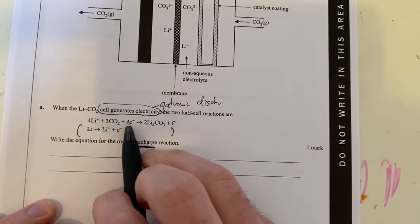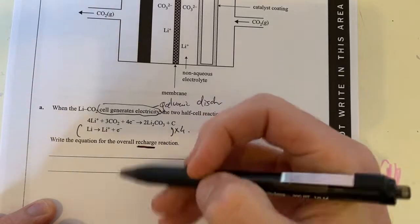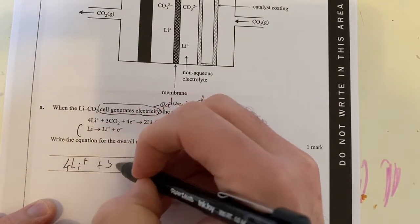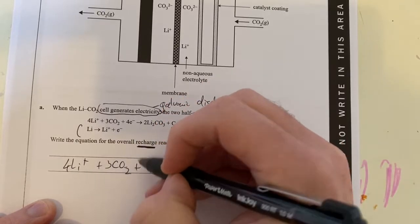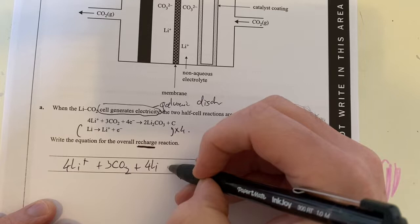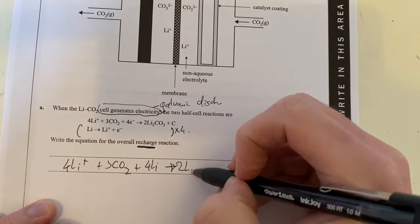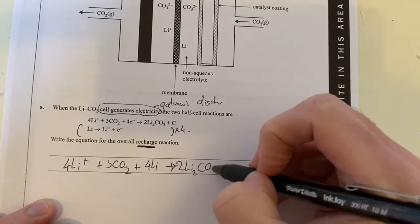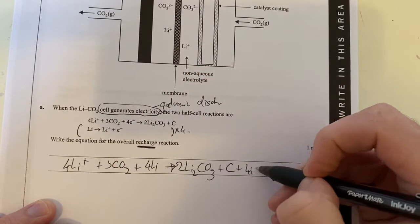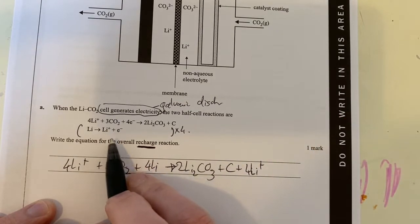First thing I need to know is the fact that our electrons must be the same, so I have to times that by four, and I'll add the two things together. So I'm going to have four lithium positive plus three CO2, and then my electrons are going to cancel out, plus four lithium metals, and that's going to form two lithium carbonates and a carbon and four lithium ions on this side. So I'm just simply adding together.